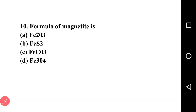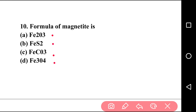Going to next question, that is question number ten: which of the following is the formula of magnetite? Magnetite is an ore of iron. There are four options: Fe2O3, Fe2O3, FeCO3, Fe3O4. The right answer is option D, that is Fe3O4. Fe3O4 is called magnetite and Fe2O3 is called hematite.